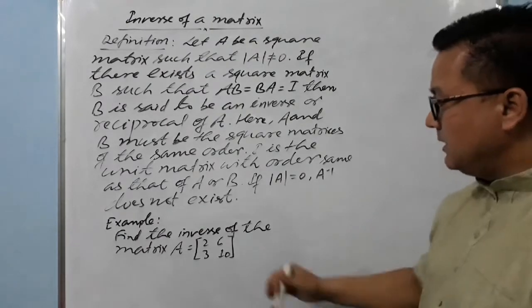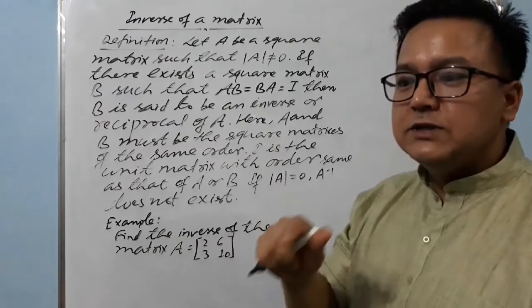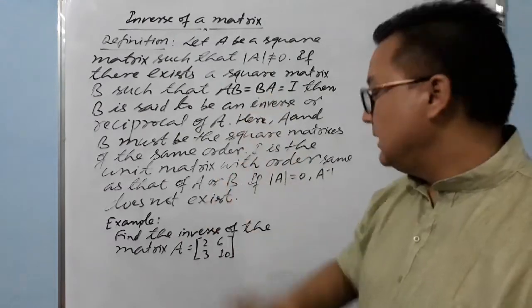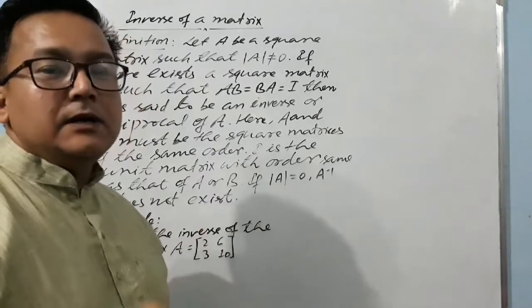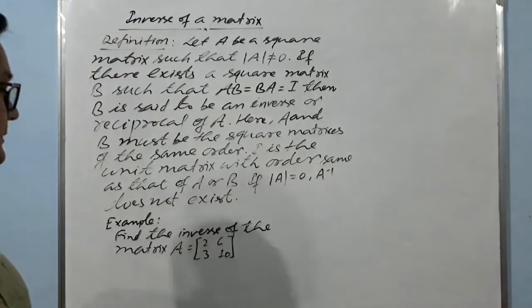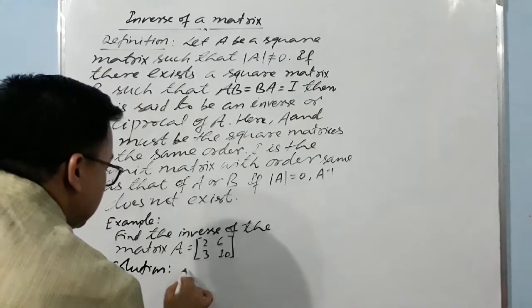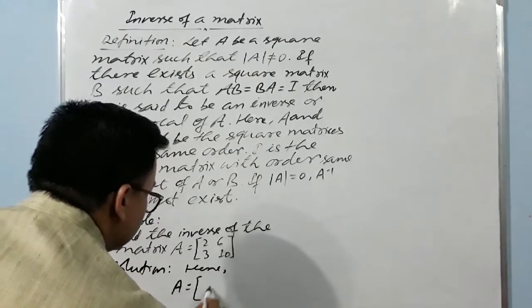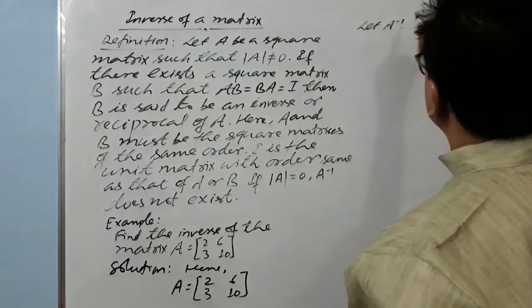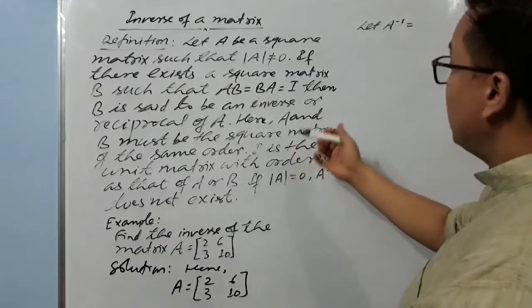Using this definition, let's find the inverse of matrix A. How to find it without using a formula — using the definition directly. We will later derive a simpler formula, but first let's see how to find it by definition. For A = [2, 6; 3, 10], let A inverse equal B, an unknown matrix [a, b; c, d].